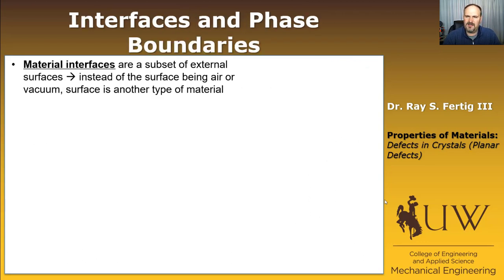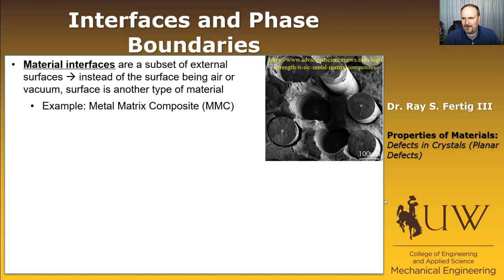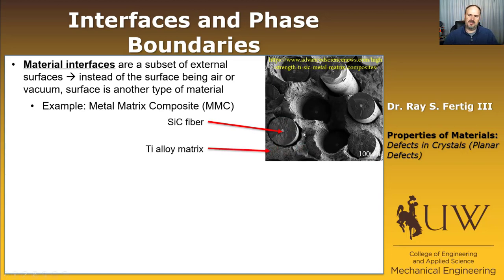Let's move on to interfaces and boundaries. A material interface is a subset of an external surface — an external surface is in contact with vacuum or air, while a material interface is the material touching another type of material. An example is a metal matrix composite: shown here is an SEM image with a 100-micron scale bar of a silicon carbide fiber embedded in a titanium alloy matrix. As expected, those interfaces are higher energy than the bulk of either material.